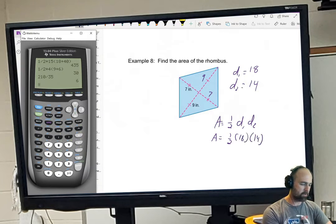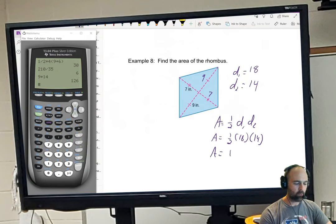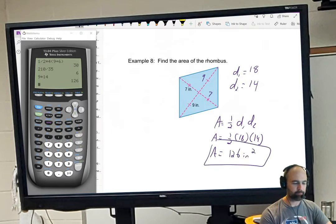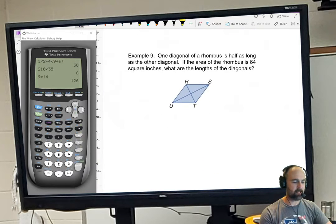So I'm just going to go ahead and do 9 times 14. 9 comes to one half times 18, which gives us 126 inches squared. All right.